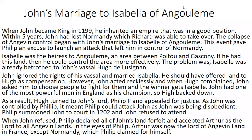John's marriage to Isabella of Angoulême: when John became king he inherited an empire that was in a good position, yet within five years he had lost Normandy. The collapse of Angevin control began with John's marriage to Isabella of Angoulême - this was the spark, the beginning of everything. This event gave Philip an excuse to launch an attack that left him in control of Normandy.